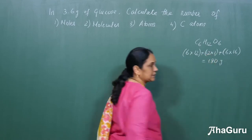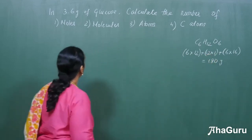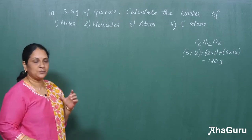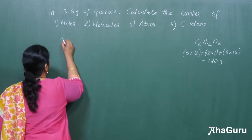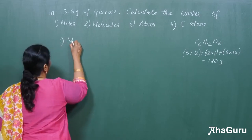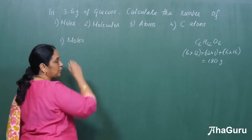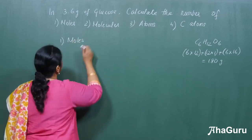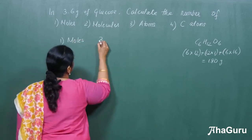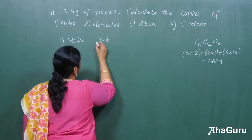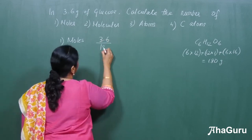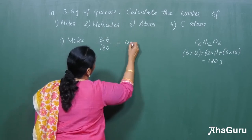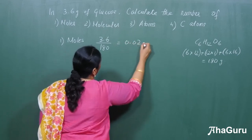We will take the molecular weight as 180 grams. The given weight is 3.6 grams of glucose. To calculate the number of moles, the formula is given weight divided by molecular weight. So 3.6 divided by 180 gives you 0.02 moles.